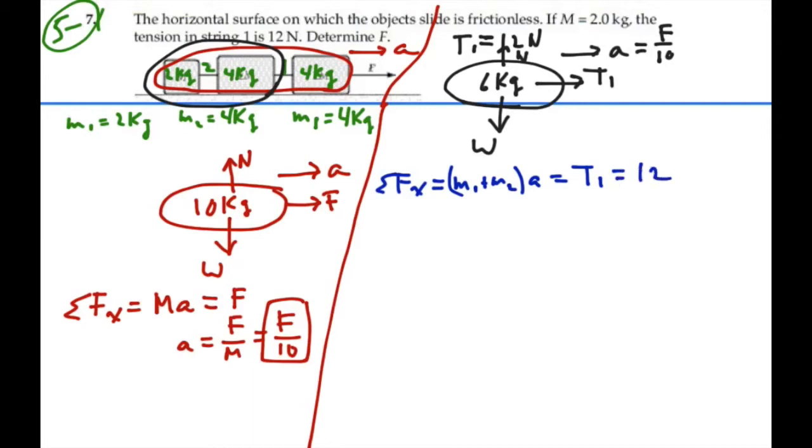So what we have is 6 kilograms times acceleration is equal to 12. Acceleration is going to equal 12 divided by 6, or 2 meters per second squared.